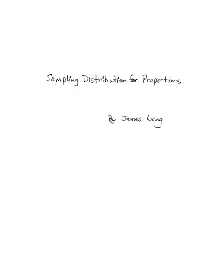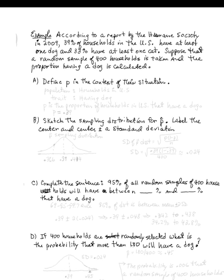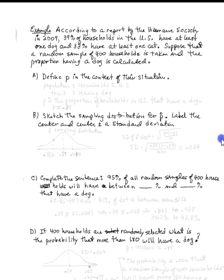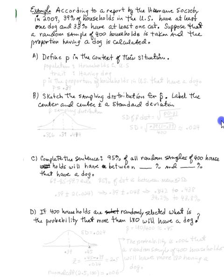This is 'Sampling Distributions for Sample Proportions' by James Lyon. The example we will start with says: according to a report by the Humane Society in 2009, 39% of households in the U.S. have at least one dog and 33% have at least one cat.